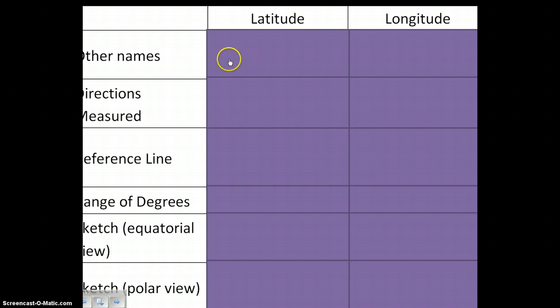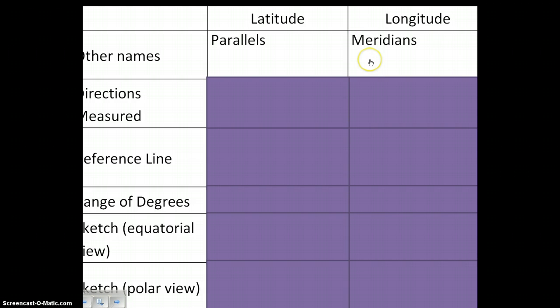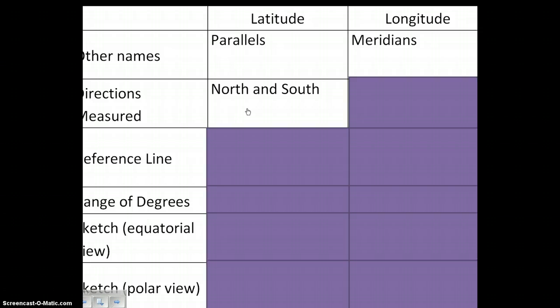So first, there's some other names for latitude and longitude. The other name that we use for latitude, each line we refer to as a parallel. So either a line of latitude or a parallel. And for longitude, we refer to these as meridians. You might notice that the main meridian that we deal with, the prime meridian, is actually found in Greenwich, England. Now we measure north and south with latitude, which kind of confuses people because latitude is horizontal. So you would imagine that if you're dealing with something horizontal, it would be east and west. And while the lines do run east to west, we'll notice that latitude tells us how far north or south of the equator we are. For longitude then, of course, it's east and west.